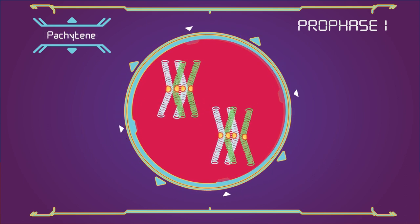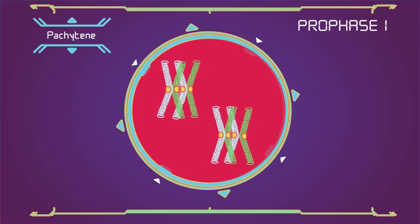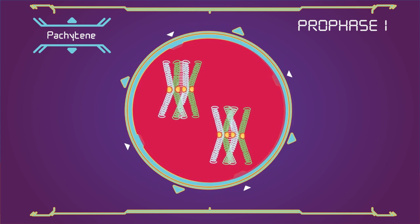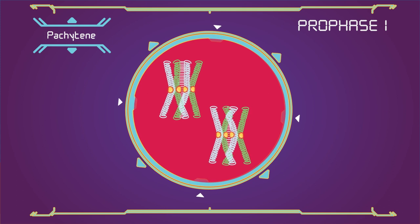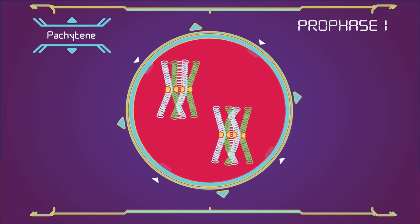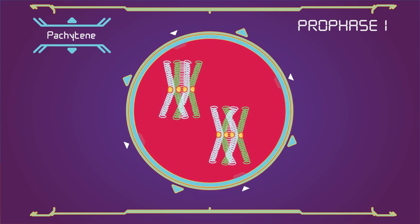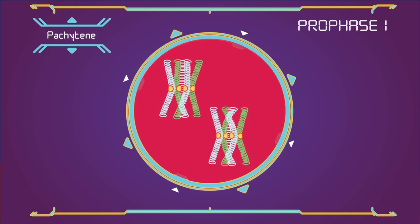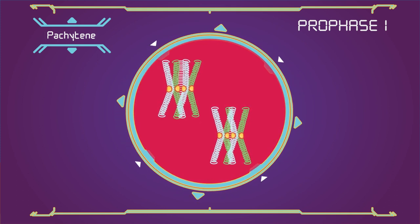Pachytene: This is the stage when homologous recombination, including chromosomal crossover (crossing over), occurs. Non-sister chromatids of homologous chromosomes may exchange segments over regions of homology. At the sites where exchange happens, chiasmata form.